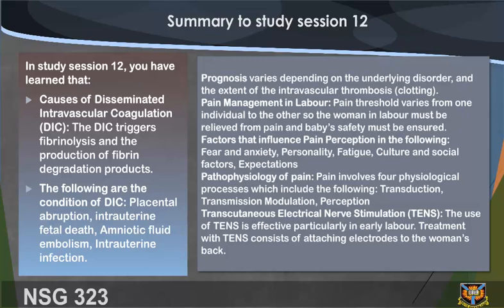Summary: in study session 12, you have learned about the causes of disseminated intravascular coagulation (DIC), that DIC triggers fibrinolysis and the production of fibrin degradation products, and the conditions associated with DIC, including placenta abruption, intrauterine fetal death, amniotic fluid embolism, and intrauterine infection. Prognosis varies depending on the underlying disorder and the extent of intravascular thrombosis and clotting.